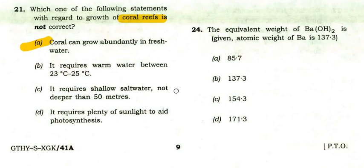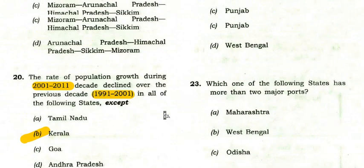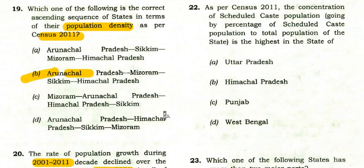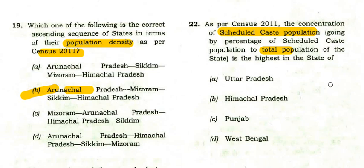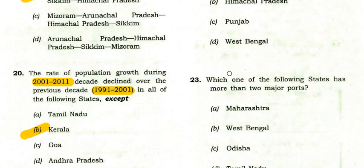As per Census 2011, the concentration of scheduled caste population as a percentage of total state population is highest in Uttar Pradesh, which has the highest population of scheduled castes.